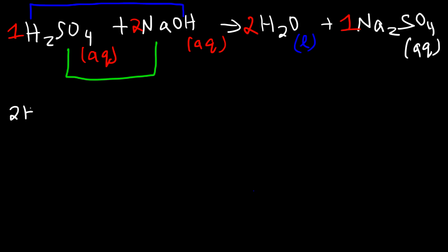It has two hydrogen ions and one sulfate ion. Next let's move on to sodium hydroxide. So we have two sodium ions. Don't forget there's a two in front. And two hydroxide ions. Now let's move on to sodium sulfate.